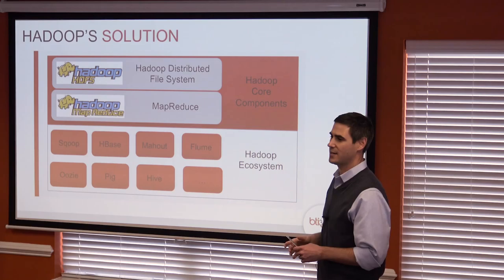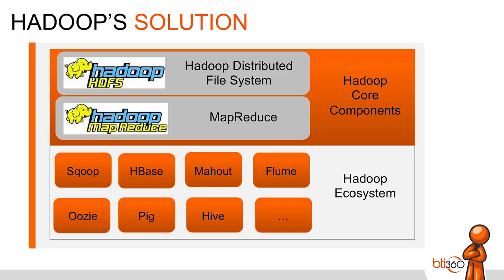For those who must know, Sqoop and Flume really just import data into HDFS. Pig and Hive allow non-Java developers to be more productive. Oozie is kind of a workflow utility. But all of them really just facilitate the top two things. So we're going to talk about the core components and start with HDFS.